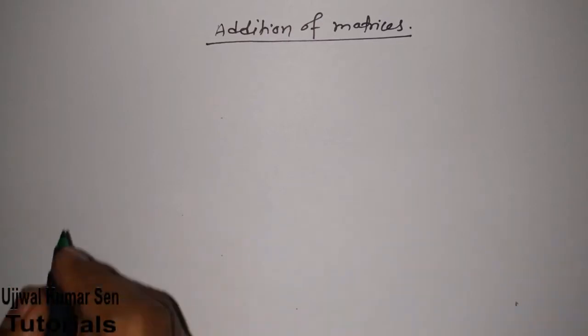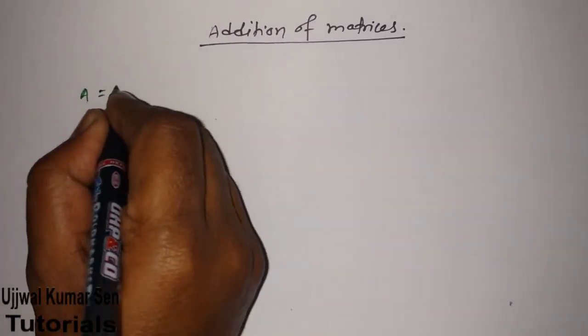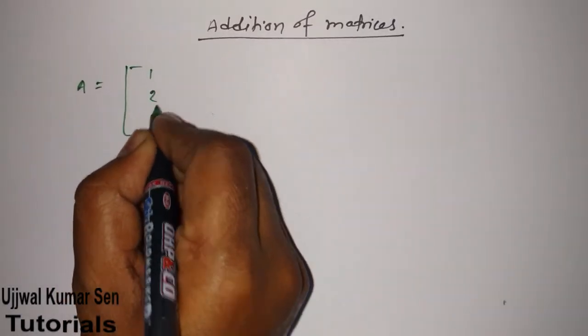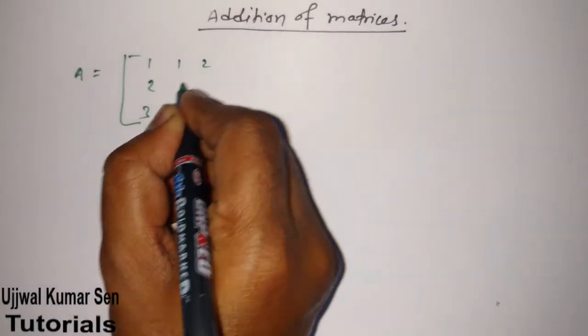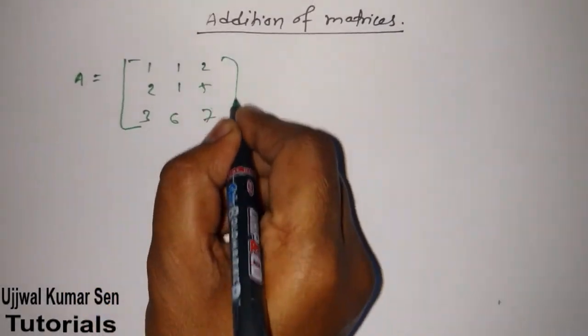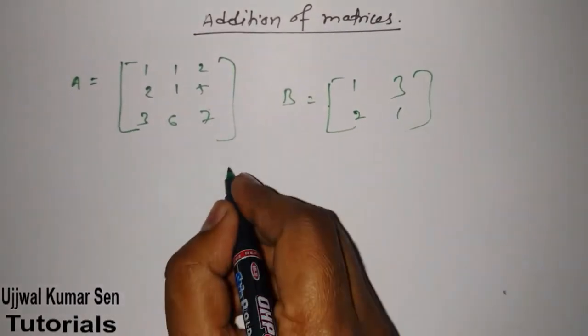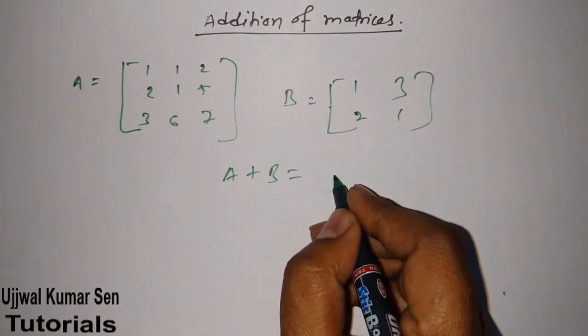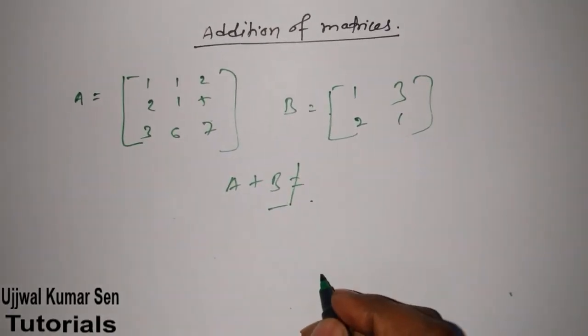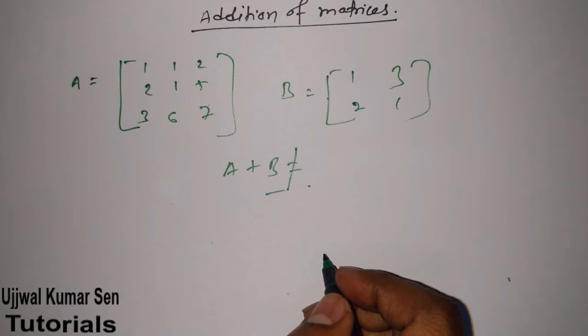Suppose that we have given A is equal to 1, 2, 3, 1, 2, 1, 5, 6, 7. And B is equal to 1, 2, 3, 1. If you wanted to tell A is equal to B then it's not possible. Because for being addition matrices we need to have same matrix.